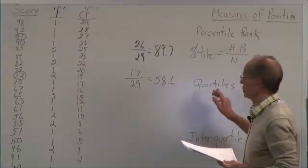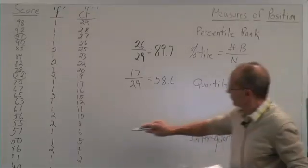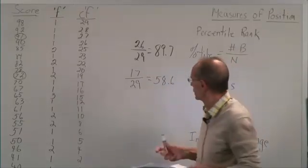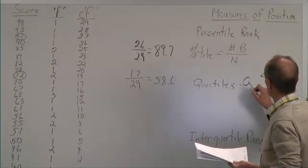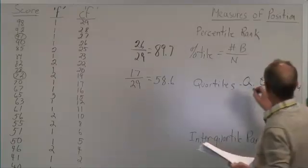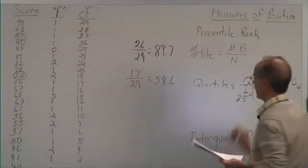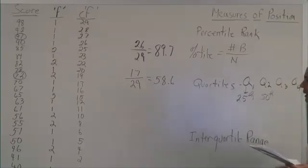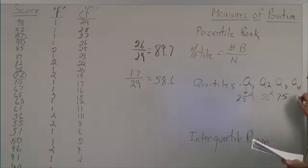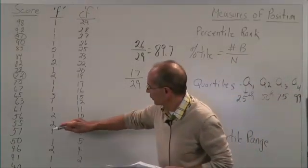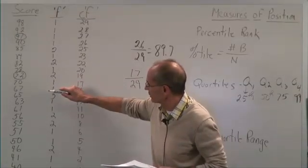Another measure of position is the quartile. Quartiles divide a distribution of scores into four equal intervals. We have Q1, Q2, Q3, and Q4. Q1 is the 25th percentile and below. Q2 is the score at the 50th percentile and below. Q3 is the 75th percentile. Q4 is the 99th percentile, which we don't often see. You're often asked to determine which scores represent the first, second, or third quartile.